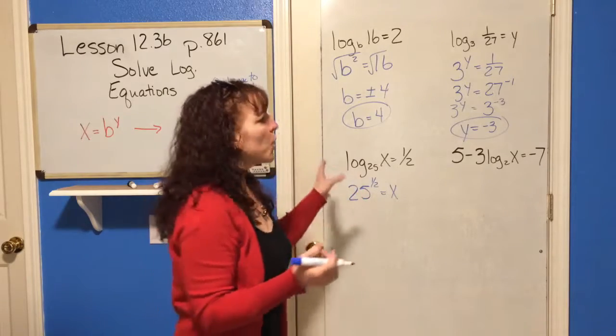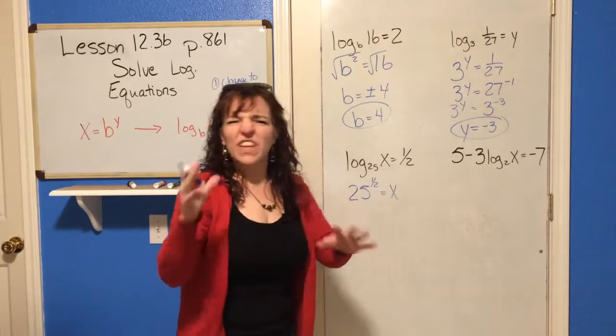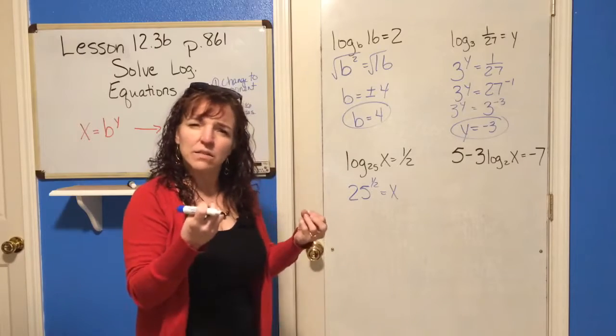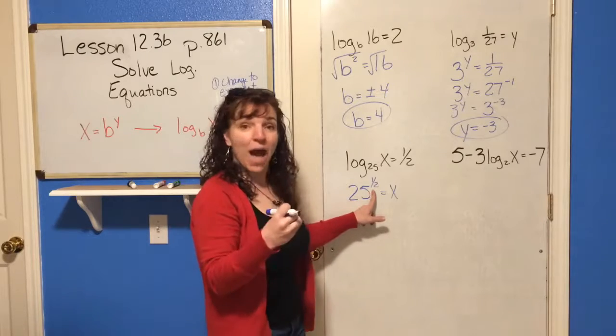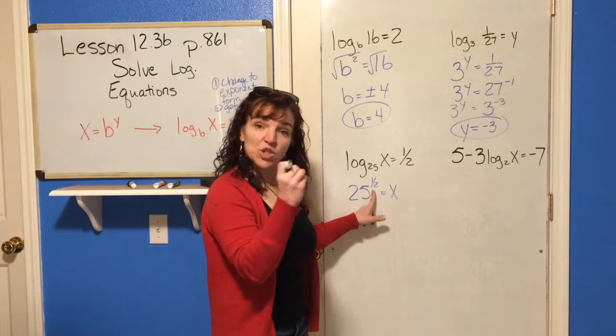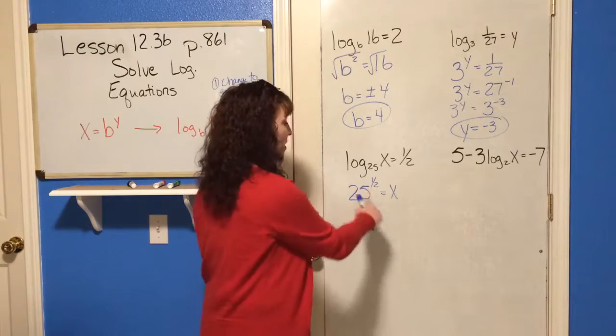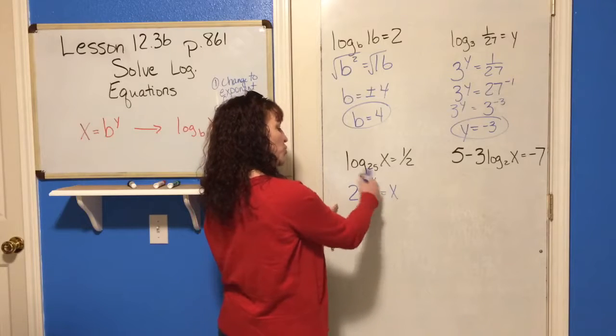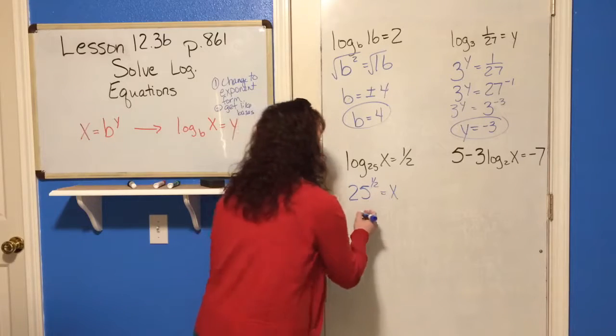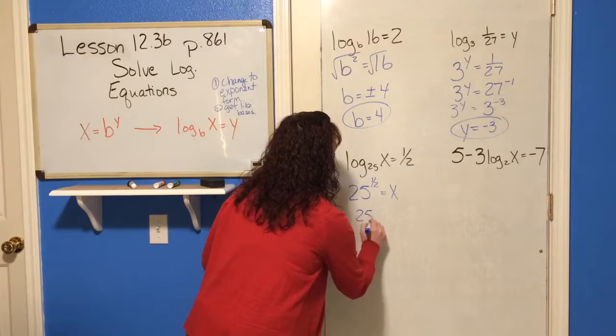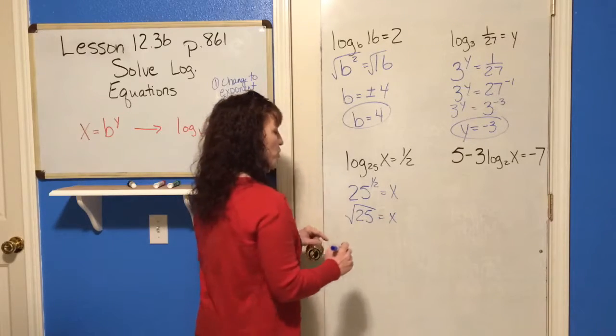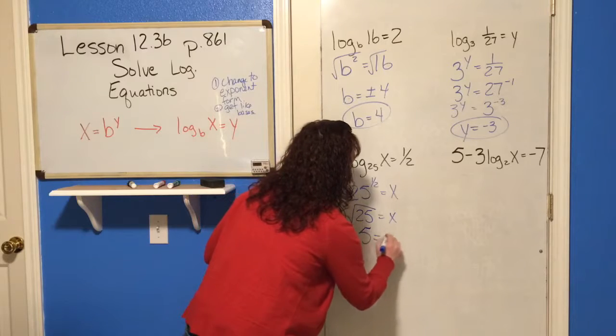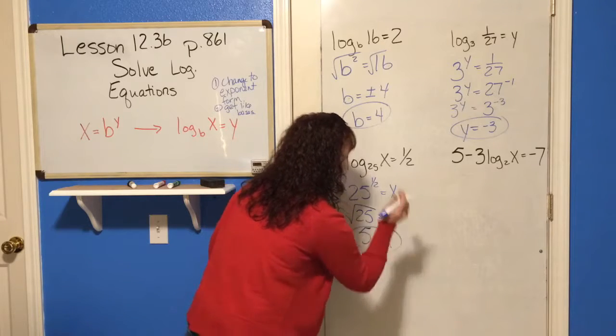So, 25 to the 1 half power. Now, what we're doing is we're putting all of the different things that you've learned together into one lesson. So, the 1 half power, remember, is the same as the square root. Remember, because the 1 is the exponent and the 2 is the root. So, 25 to the 1 half power is the square root of 25. So, the square root of 25 is 5, and so 5 equals x, and you're done.